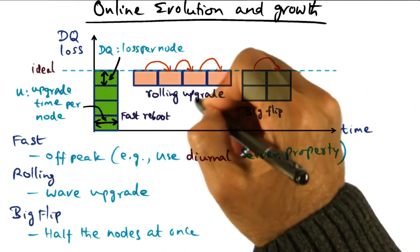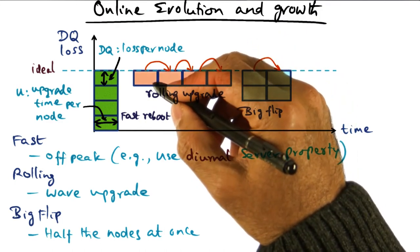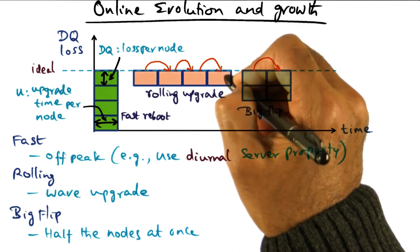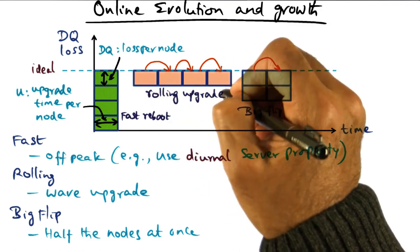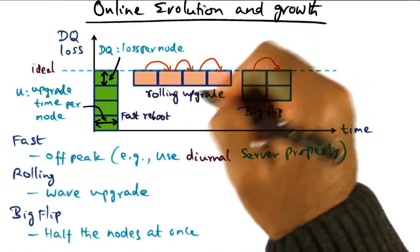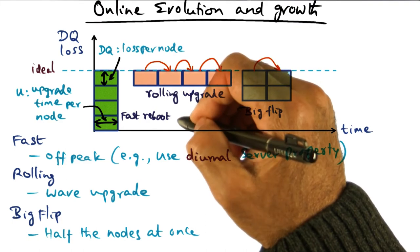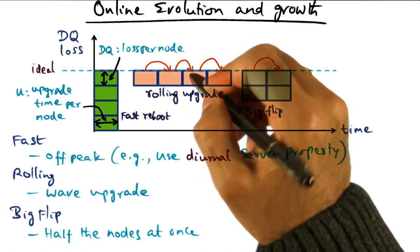Rolling upgrade is the more common one where what we're doing is we are upgrading the servers one at a time. But it's going to take a long time, especially when you're talking about data centers having thousands and thousands of processors. Rolling upgrade is going to take a long time. And it might be done in batches, for instance, instead of being exactly one at a time.